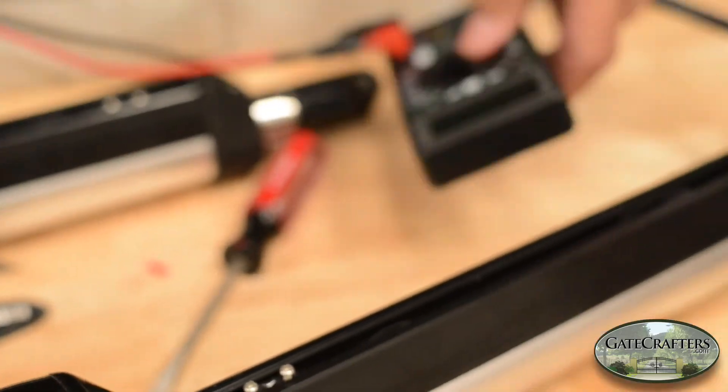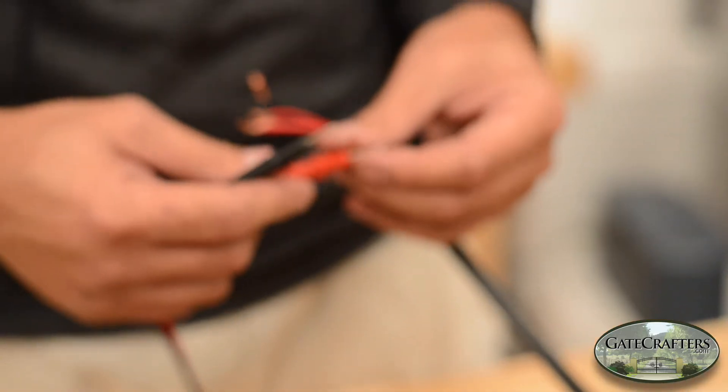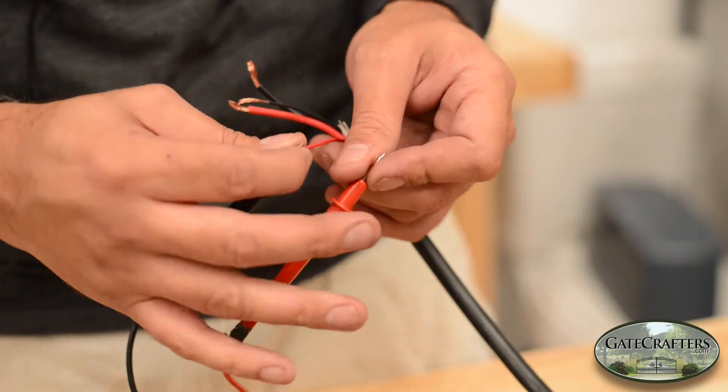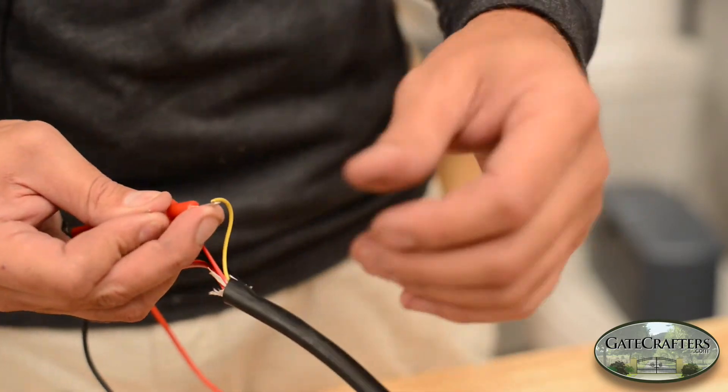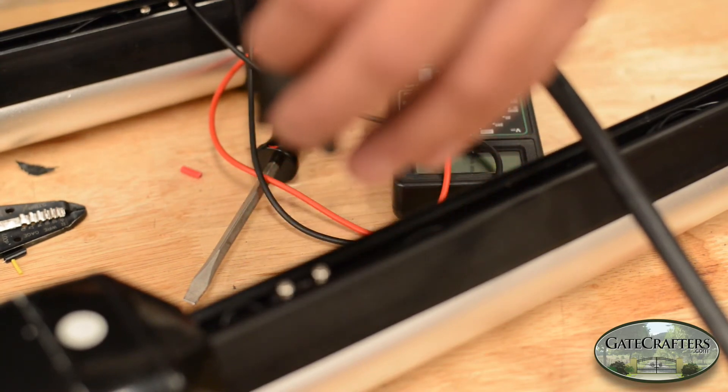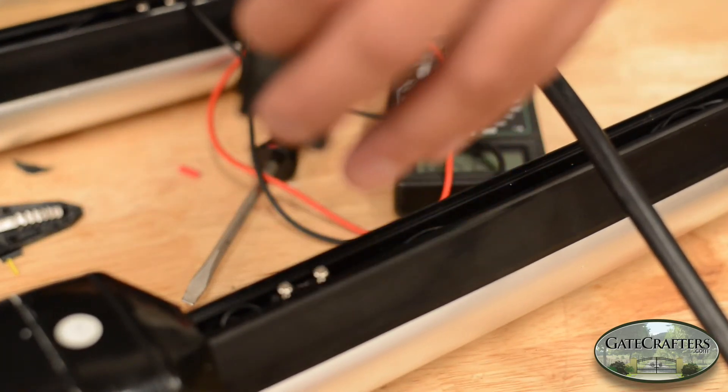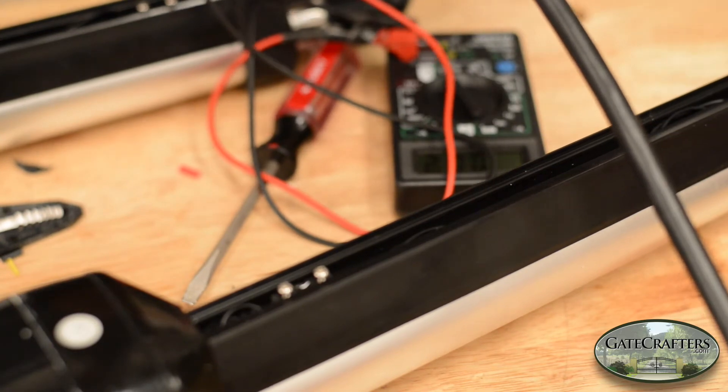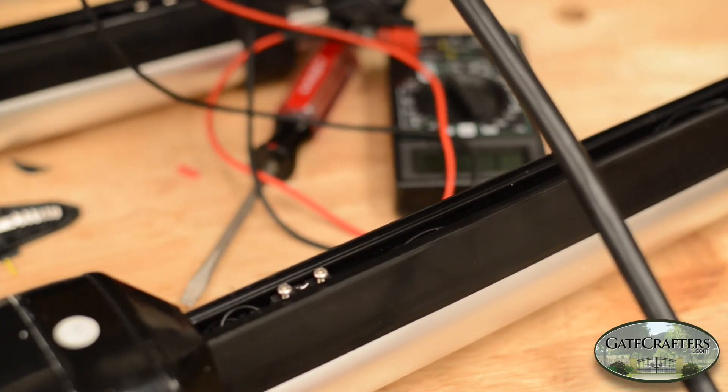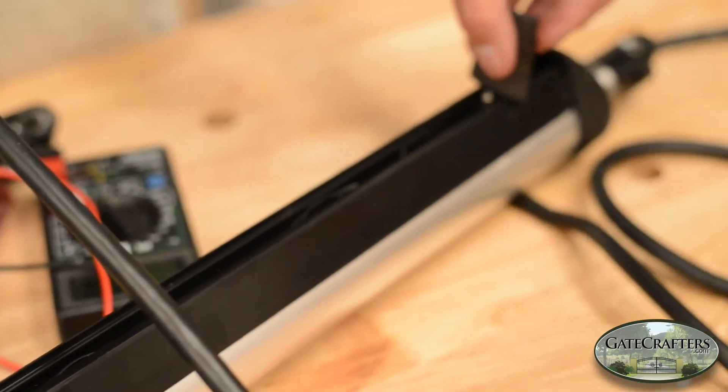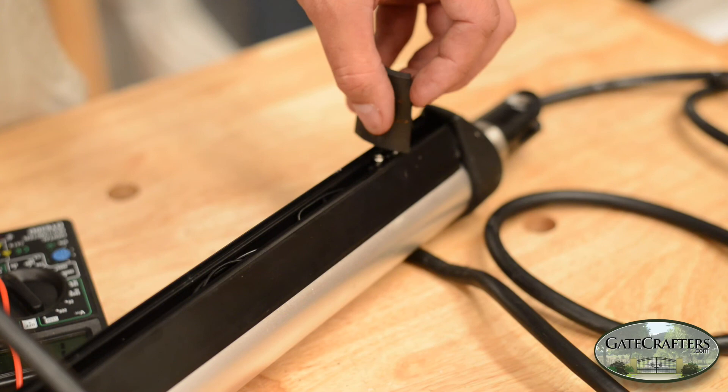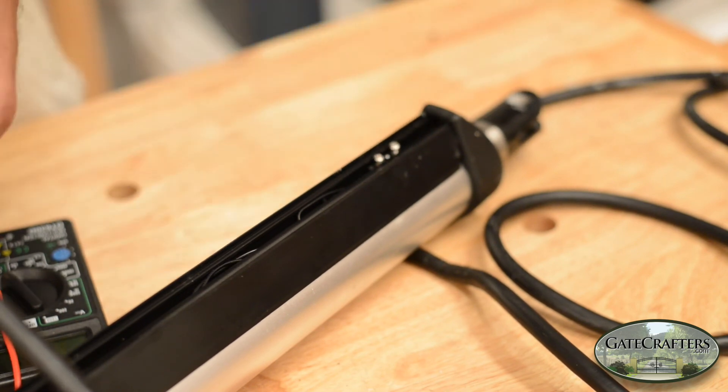So you can set the multimeter to continuity. The retracted limit is between red and yellow. You get that beeping noise. Take your magnet, put that over the magnet, and you'll see that it breaks the continuity, breaks the circuit. So that one's still good. We're doing this to make sure none of the wires fell off in the process, and it looks like we're good. Both the limit switches are still working, so this one's good to go.